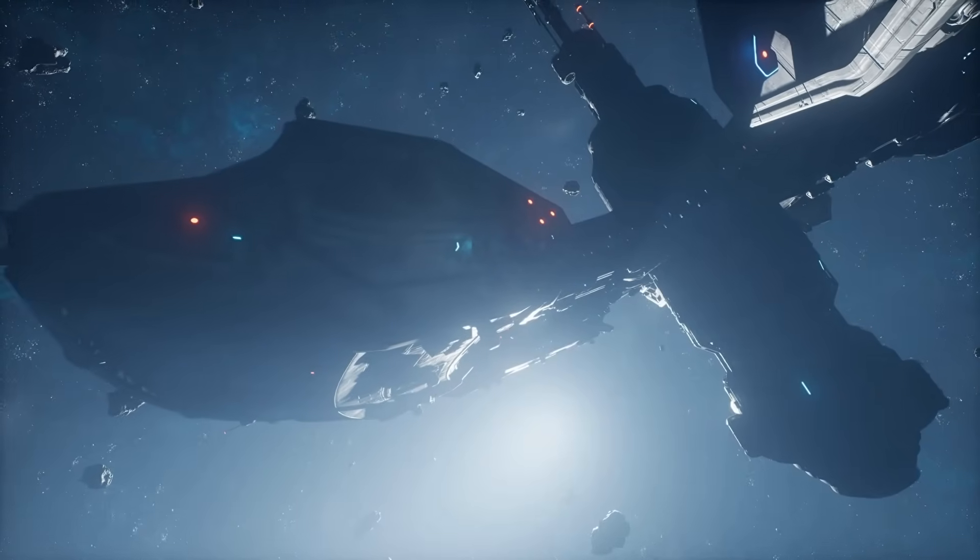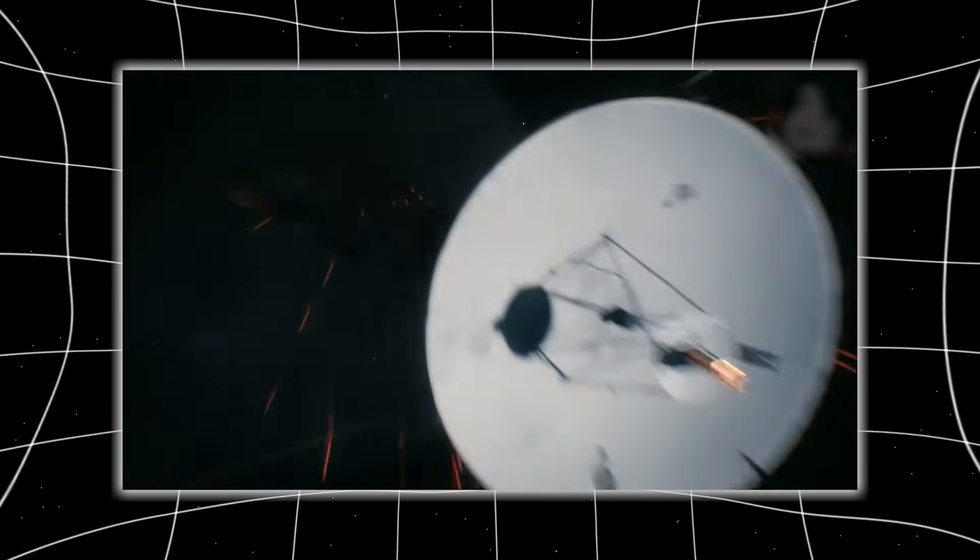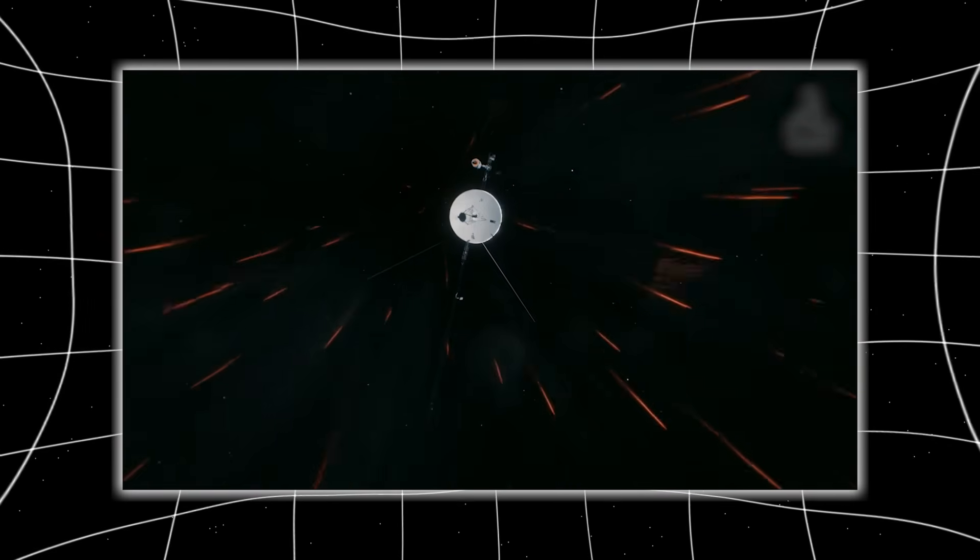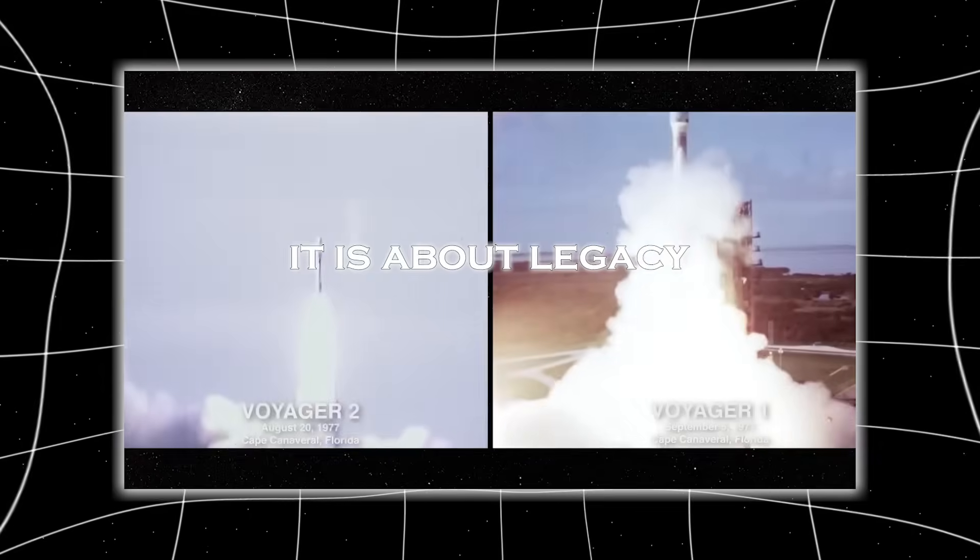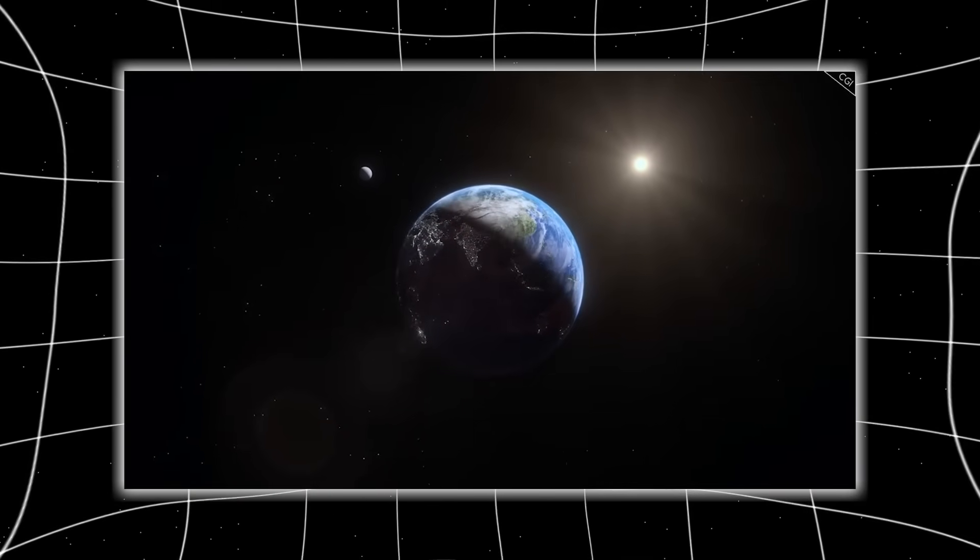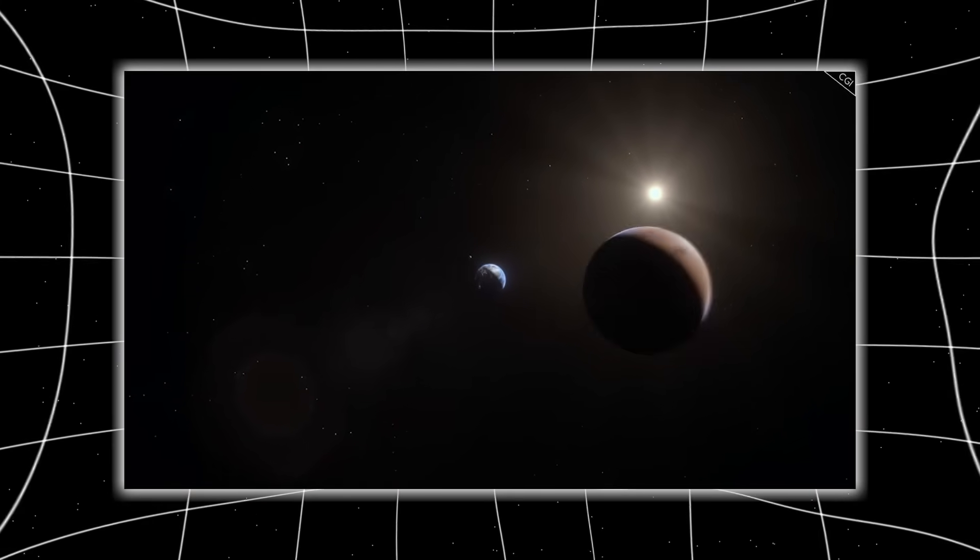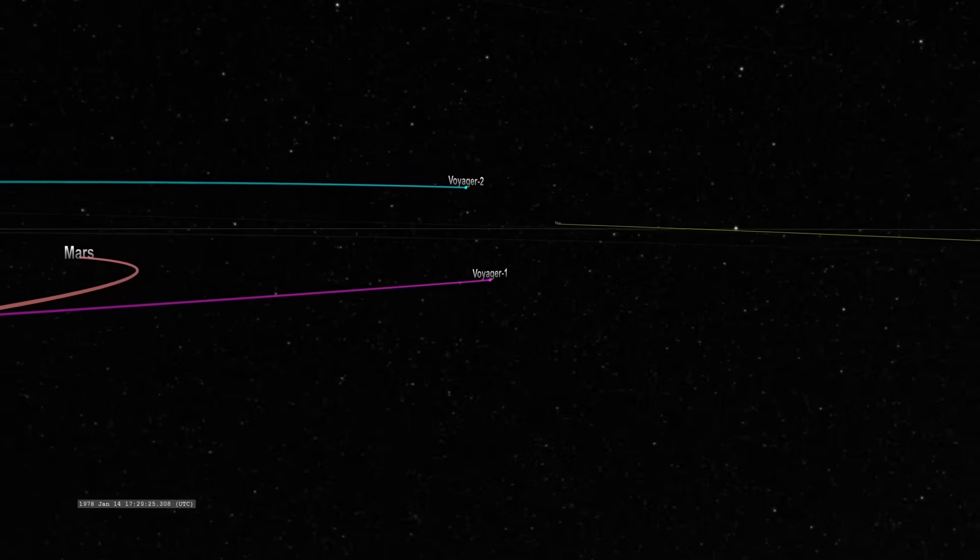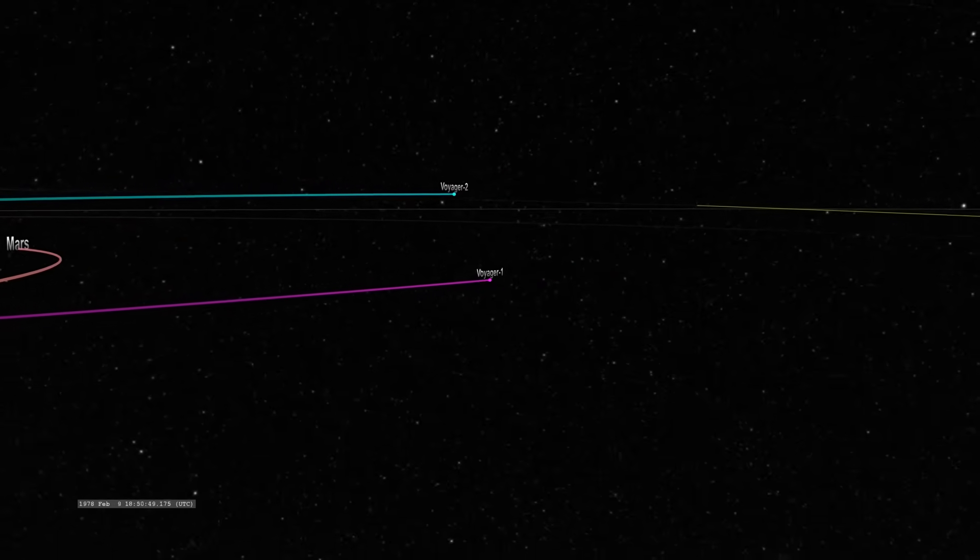While the golden record was originally conceived as a message to potential extraterrestrial civilizations, Voyager's increasing distance has transformed it into something more poetic. It is no longer about communication, it is about legacy. A preserved memory of humanity's curiosity, encoded in a disk that will survive long after the spacecraft stops transmitting. As Voyager drifts deeper into the interstellar sea, the record becomes a physical reminder that human beings once looked up, wondered, and reached outward.